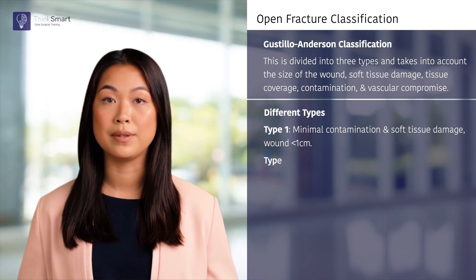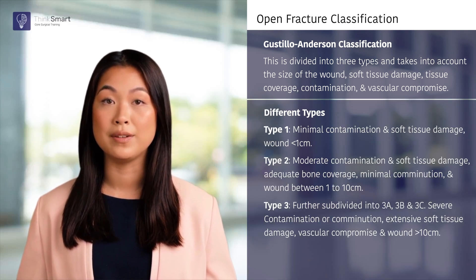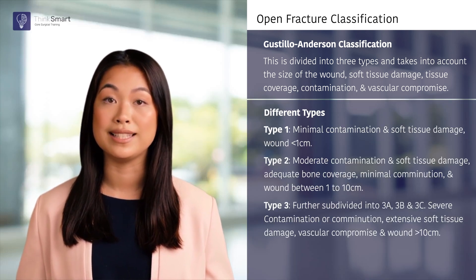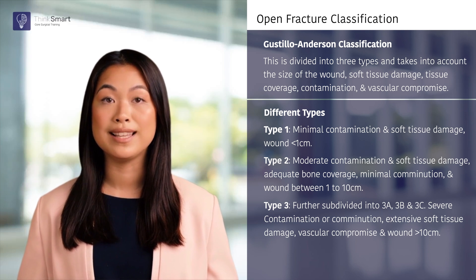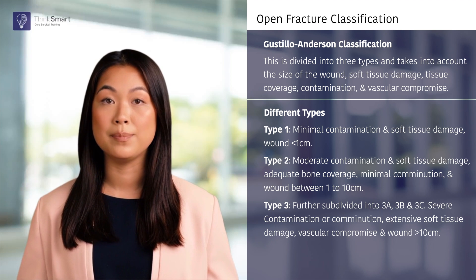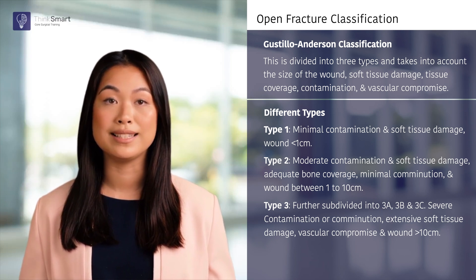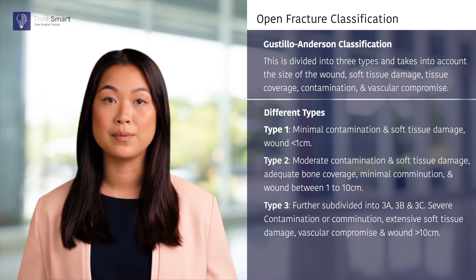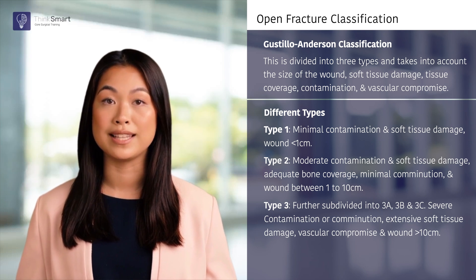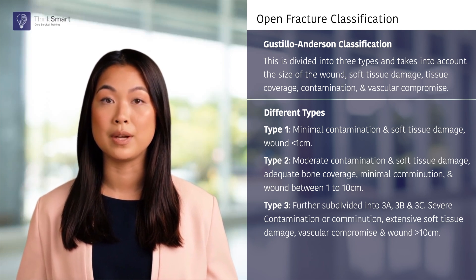Type 1 open fractures are mildly contaminated, with a laceration measuring less than 1 cm in size and minimal soft tissue damage. Type 2 fractures are moderately contaminated, with a laceration measuring between 1 to 10 cm, moderate soft tissue damage, adequate bone coverage, and minimal comminution.